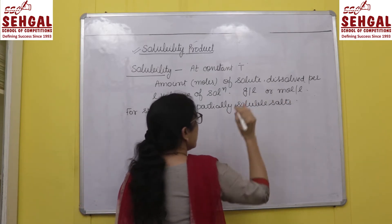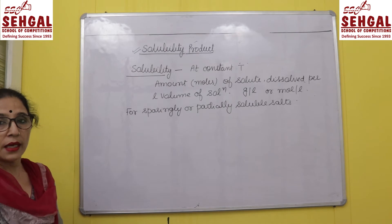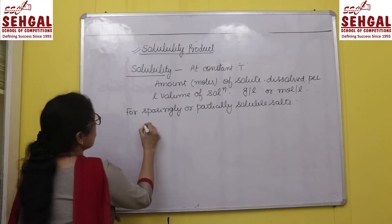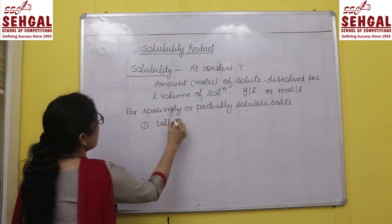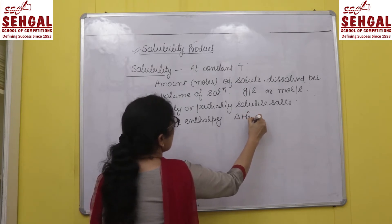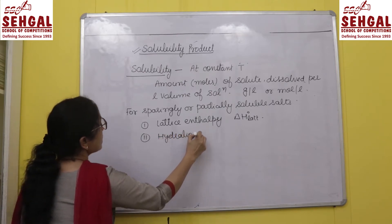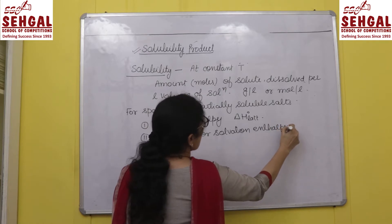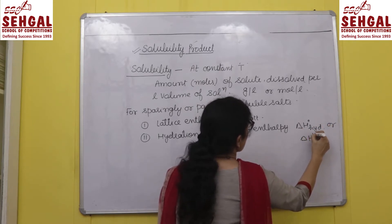When we define solubility, this is not simply a term — it involves two types of energetics in the dissolution of a salt. Two types of enthalpies are involved during solubility. The first one is called lattice enthalpy, depicted with the symbol ΔH°_lattice, and the second one is the hydration or solvation enthalpy, written as ΔH°_hydration or ΔH°_solvation under standardized conditions.